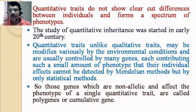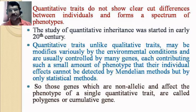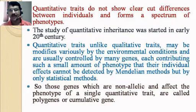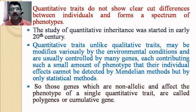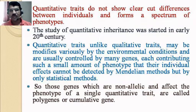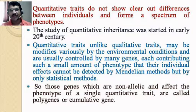Quantitative traits do not show clear-cut differences between individuals and form a spectrum of phenotypes. In qualitative traits we can identify plants as either tall or dwarf, but in quantitative traits we can't clearly recognize plants by their differences. The study of quantitative inheritance started in the early 20th century by different scientists. Quantitative traits, unlike qualitative traits, may be modified by environmental conditions and are usually controlled by many genes, each contributing a small amount to the phenotype.